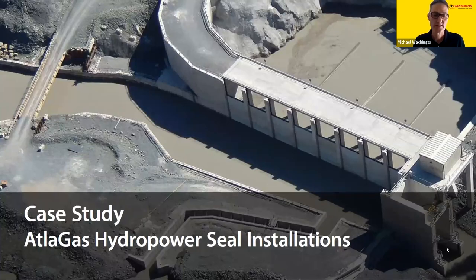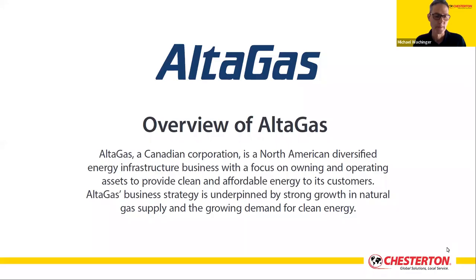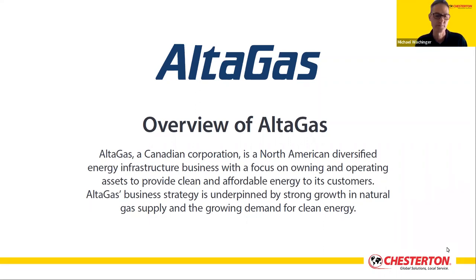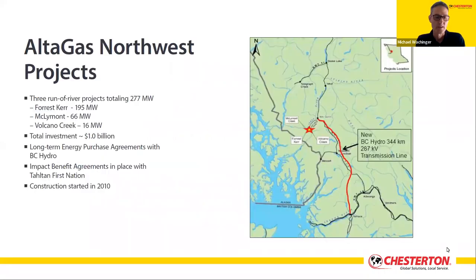To provide a case study reference, I've included the remaining slides on AltaGas Hydroturbine Power Sites in Canada. AltaGas is one of the larger energy producers supplying Canadians with gas and hydroturbine powered electricity. There are three hydropower stations located in the remote northwest of the country, generating approximately 280 megawatts of power for the grid. These stations are Forest Curve, McLiamont, and Volcano Creek, and construction began in 2010.